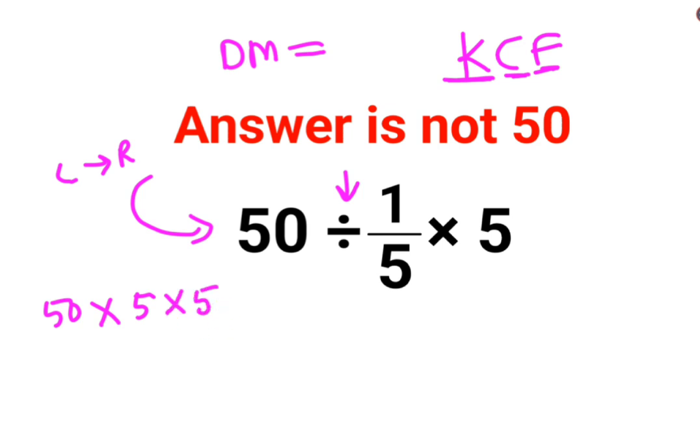So basically you have got 50 multiplied by 5 which gets you 250 multiplied by 5. So the answer for this question is supposed to be 1,250.